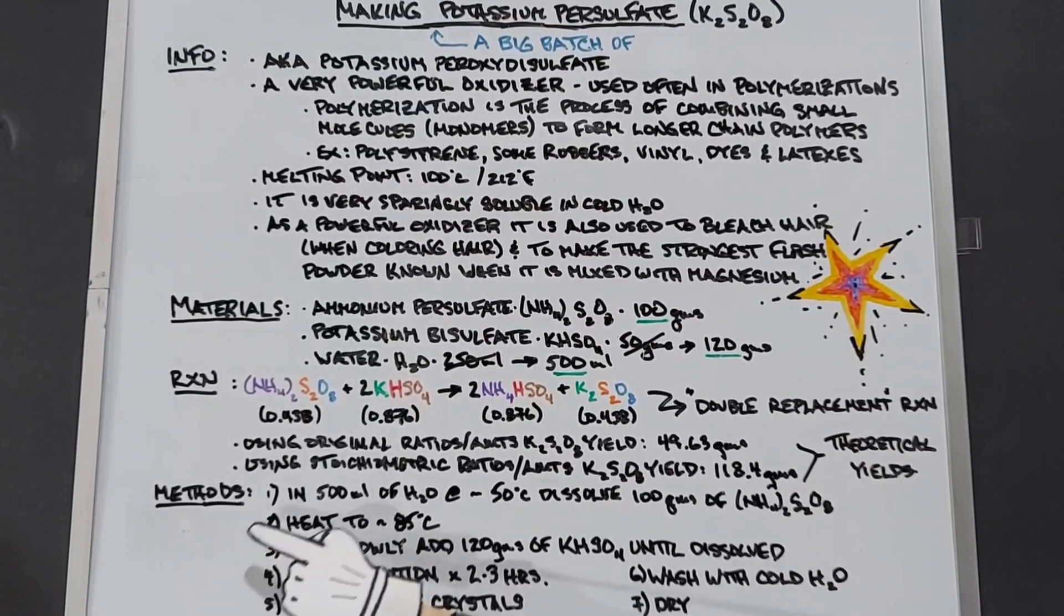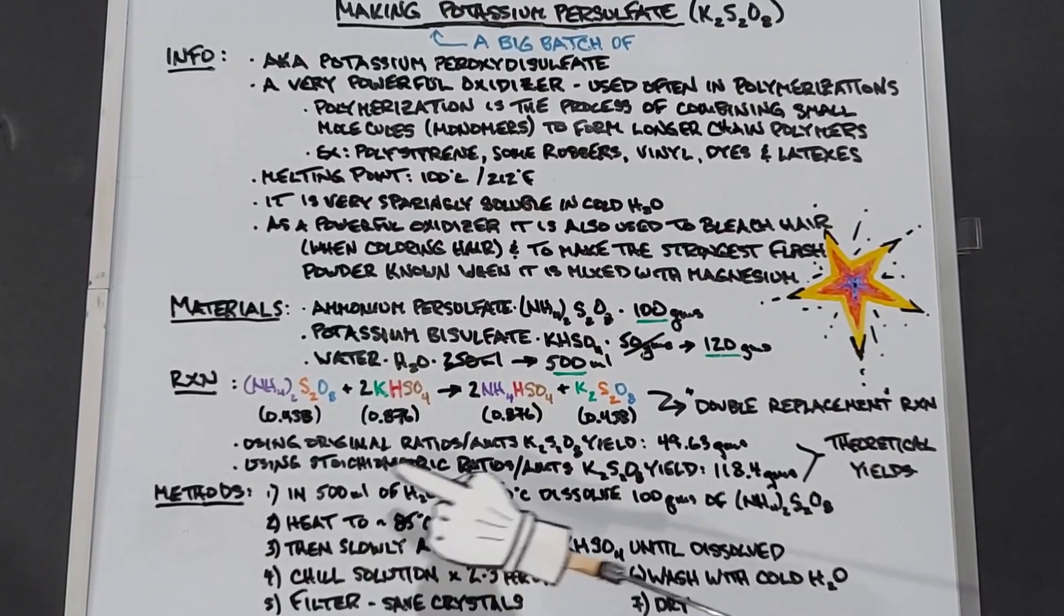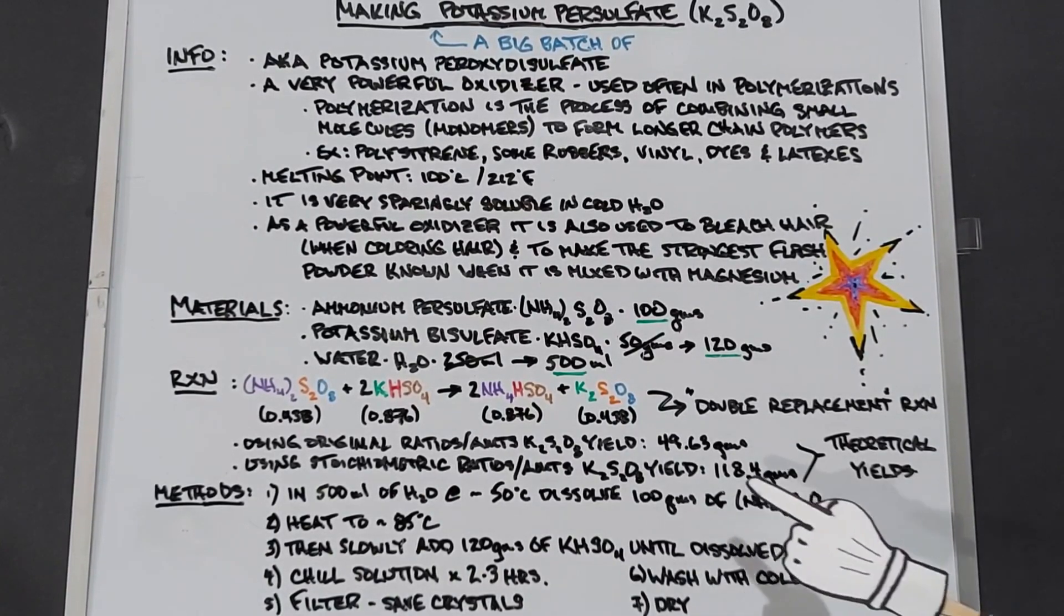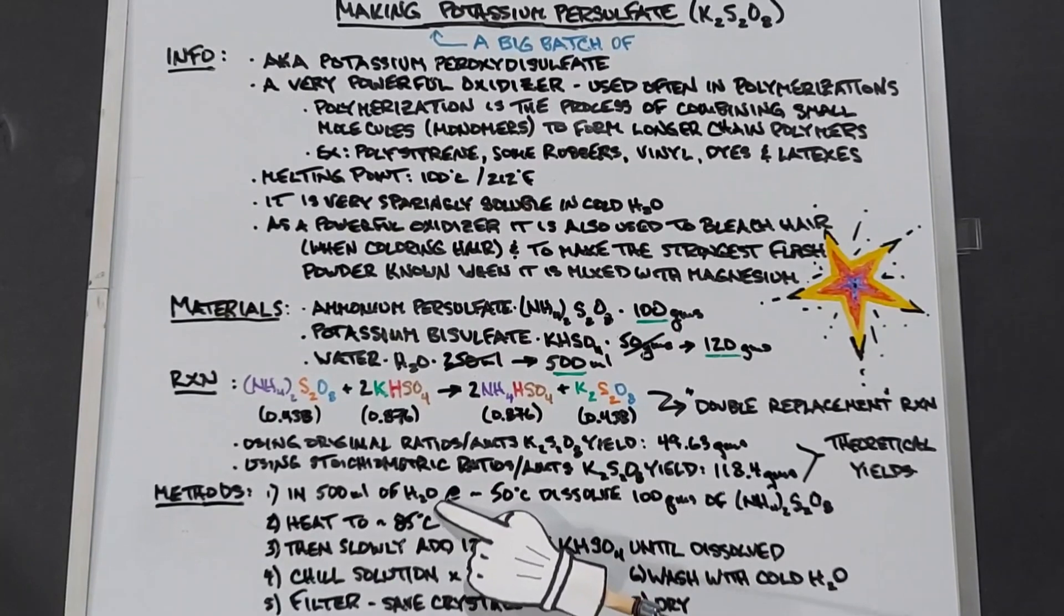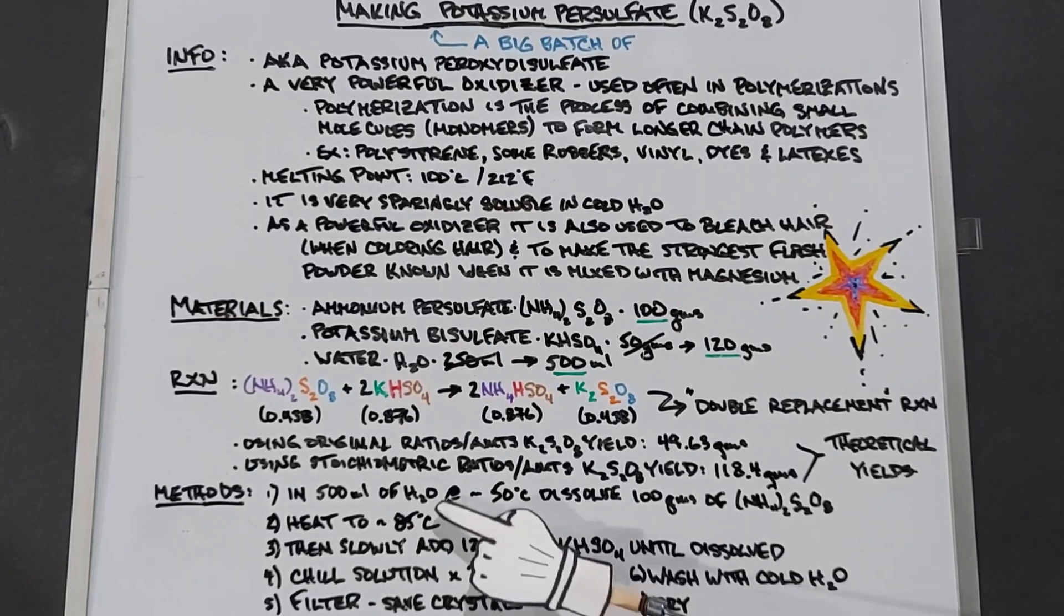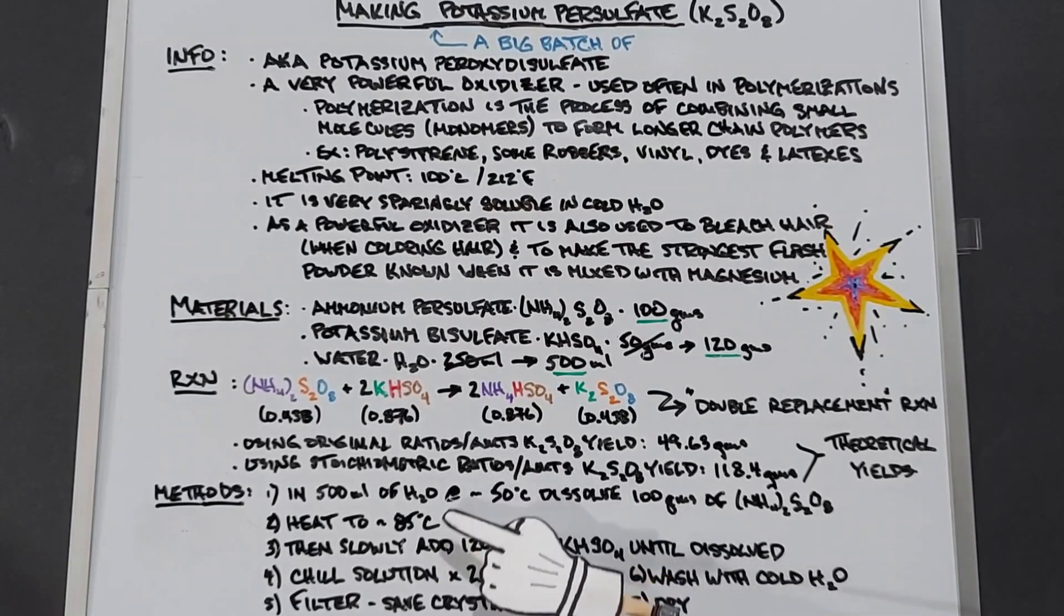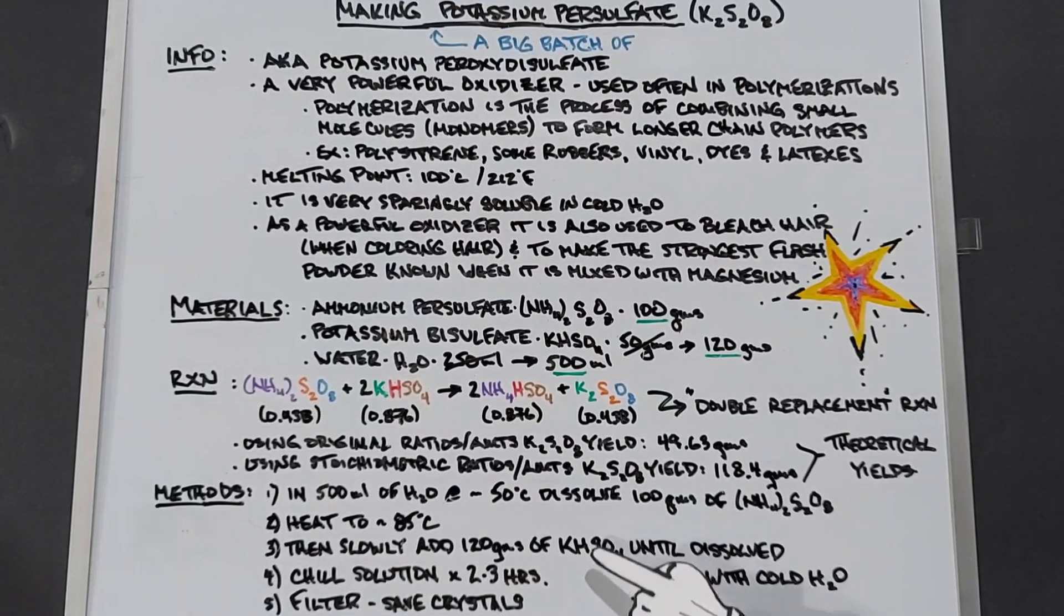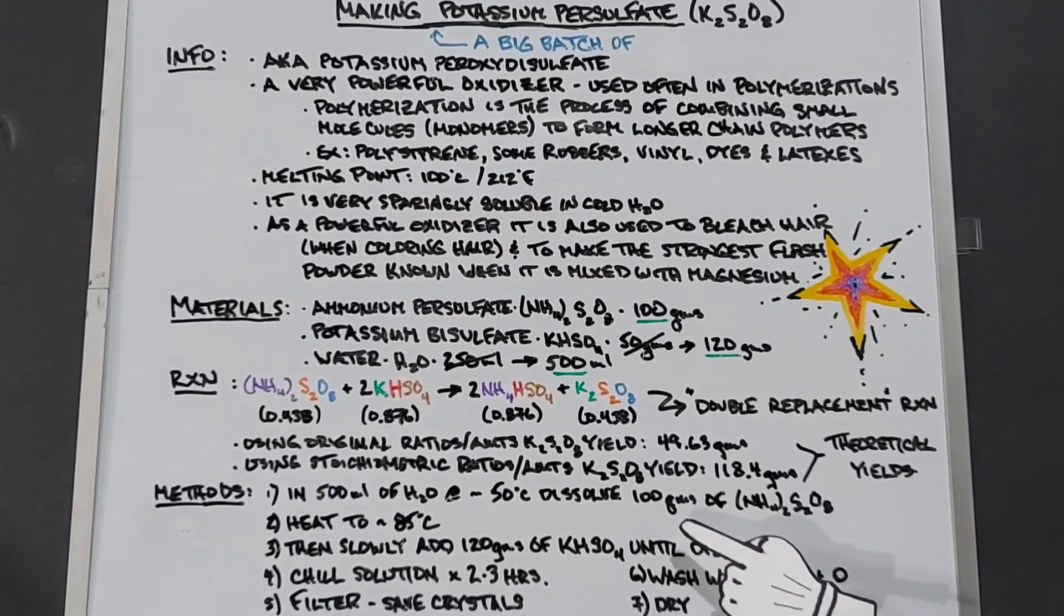In the methods, in the 500 milliliters of water, we're going to warm it to 50 degrees Celsius and dissolve 100 grams of the ammonium persulfate. Then after that, we're going to heat it to 85 degrees Celsius because the potassium bisulfate does not want to dissolve easily in water, so we're heating it up. These are the temperatures that I determined the first time I did this when I was messing around with it, and it did work. So heating it to 85 degrees Celsius, then slowly dissolve 120 grams of the potassium bisulfate until it's completely dissolved. This will eventually happen. Sometimes it takes some time, but it does happen.